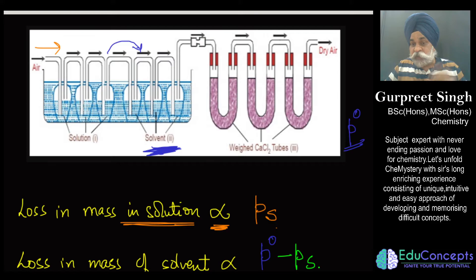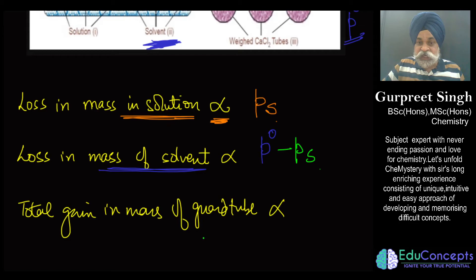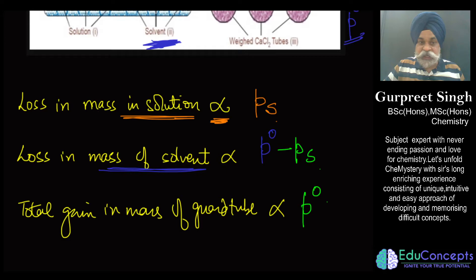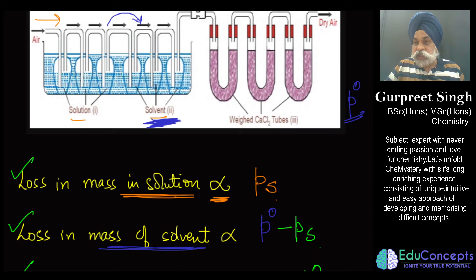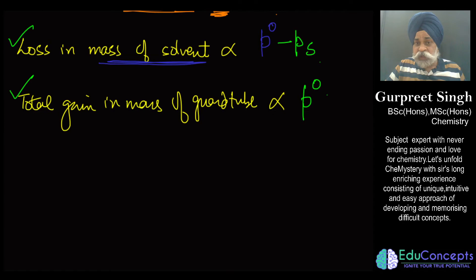Some amount of vapor is already present in the air coming from the solution, so the solvent vessel mass loss corresponds to p₀ minus ps. Finally, the total loss absorbed by the guard tubes corresponds to p₀ — the maximum amount of vapors at that temperature. Whatever vapor came from the solution and from the solvent together is absorbed by the guard tubes, and that total quantity corresponds to p₀.